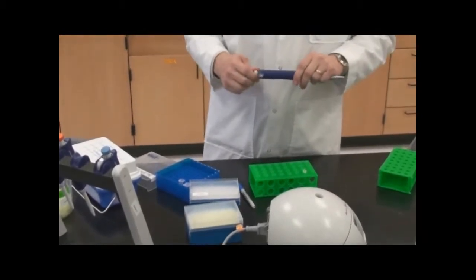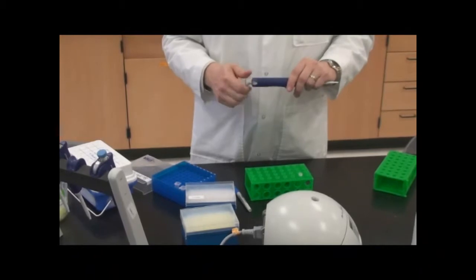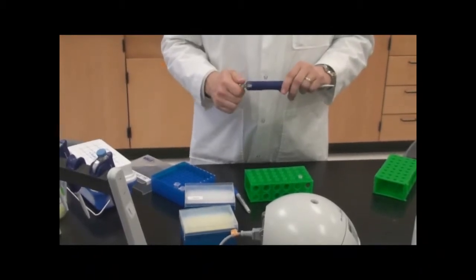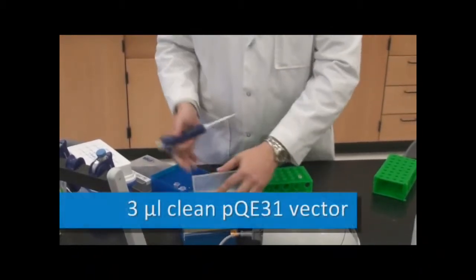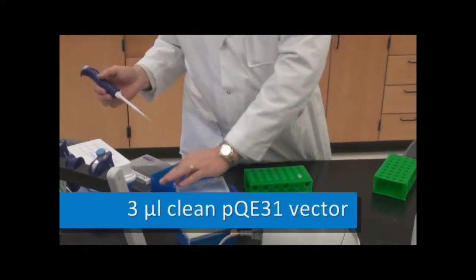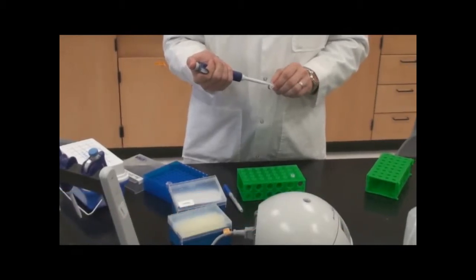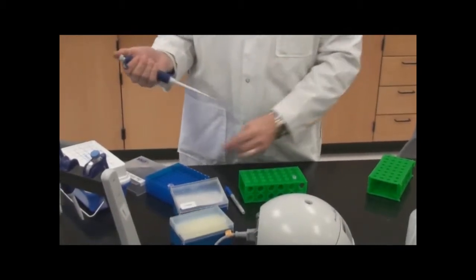So the recipe is in your manual, so I'm not going to go over that. I've got my one microliter of ligation reaction. I need three microliters of my clean PQE31 vector, and so I'm going to pull up three microliters.